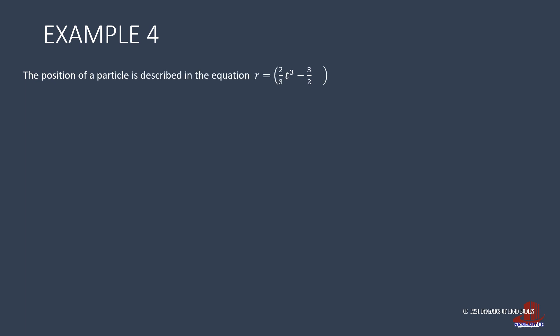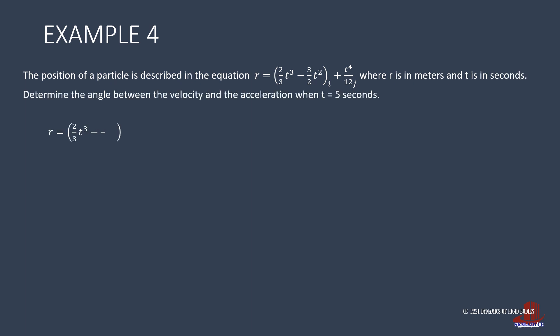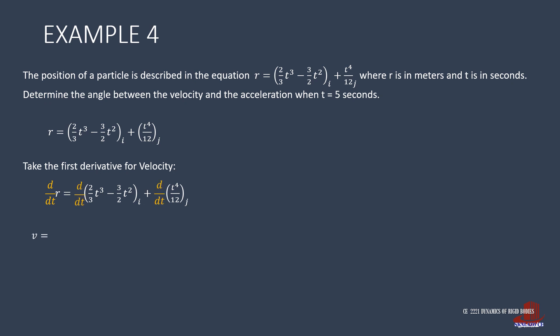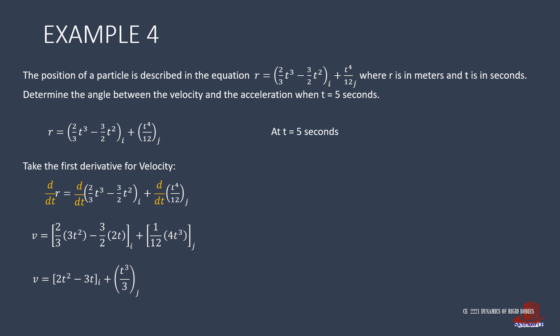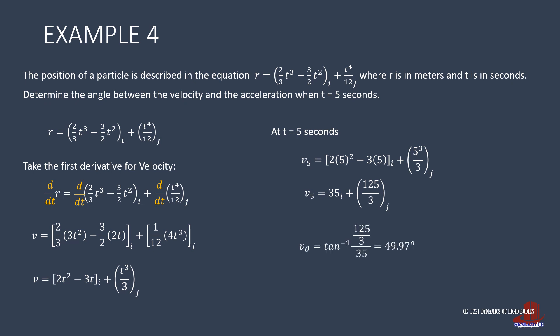What changes with the same equation of displacement but at time t equal to 5 seconds? The velocity is still generated from the derivative of the displacement, showing the same equation as before. With t equal to 5 seconds, the velocity becomes v5 equal to 35i plus (125/3)j. Using the i and j coordinates for the inclination, we get the inverse tangent of (125/3) over 35, giving 49.97 degrees.